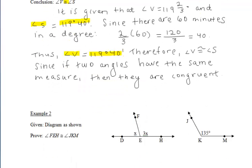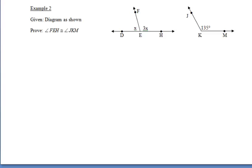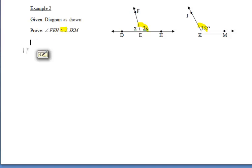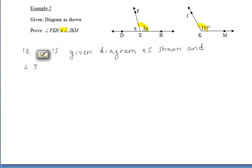Let's take a look at example two. For example two, the only thing we're given are the diagrams shown. We have the diagrams to the right to work with. In the end, we want to prove that the measure of angle FEH is congruent to the measure of angle JKM — that is, to show that angle FEH measures 135 degrees, just like angle JKM. We want to include that given information in the opening part of our paragraph proof, and also mention that the measure of angle JKM is 135 degrees.